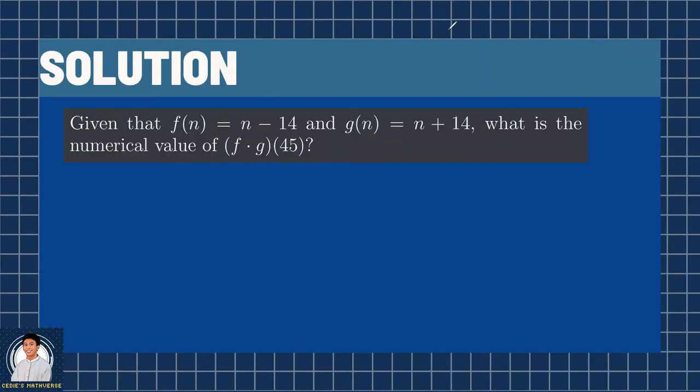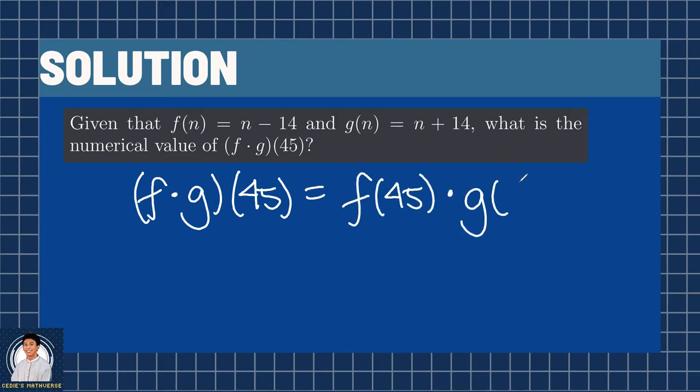The solution to this problem is pretty much straightforward. We can express f times g of 45 as f of 45 times g of 45. Since f of n equals n minus 14, we can say that f of 45 is 45 minus 14. Then g of n is n plus 14, which implies that g of 45 is 45 plus 14.